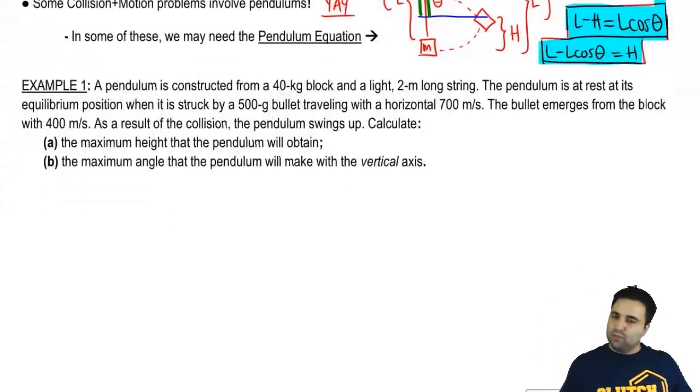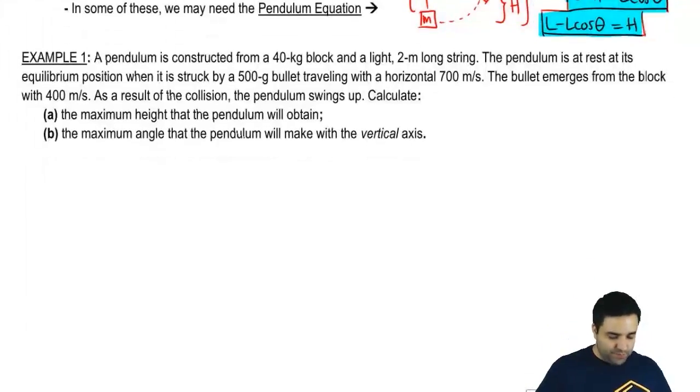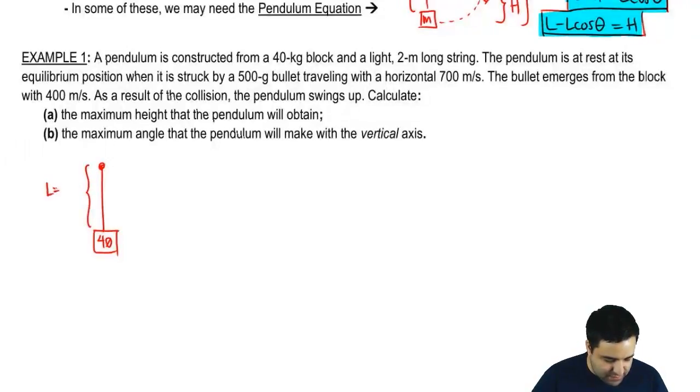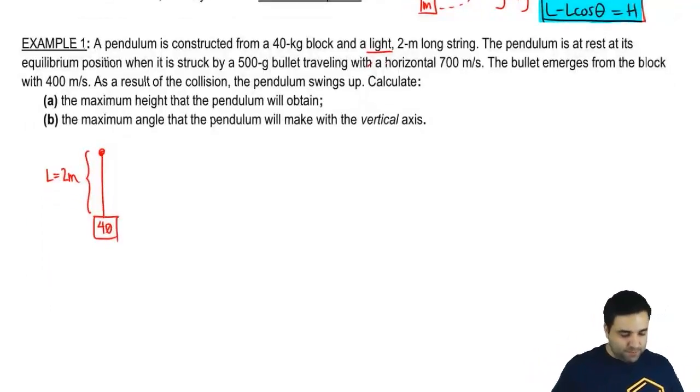Let's do an example here real quick. The rest is pretty similar to what we've already done in terms of using momentum and energy equations. So pendulum is constructed from a 40 kilogram block. So let me draw a little string here and there is a 40 kilogram block and a light 2 meter long string. That's the length. Length equals 2 meters. Now light means that it's massless. The strings will always be massless in these problems. The pendulum is at rest. So it has initial velocity V.